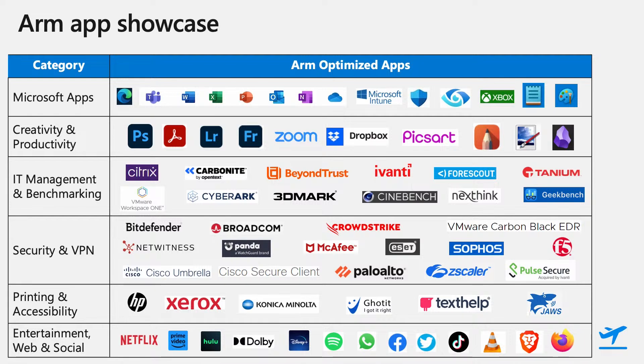In the Creativity and Productivity category, Adobe has a large portfolio of applications and has been bringing them to ARM one after another, starting with Photoshop, Lightroom, and Fresco, with Adobe Reader supported under emulation. Zoom, a popular video conferencing application, runs natively on ARM and takes advantage of built-in capabilities like Windows Studio FX. Dropbox very recently released Windows on ARM support in their preview channel. Other creativity applications like PixArt, Sketchbook, and Paint.NET also support ARM devices.